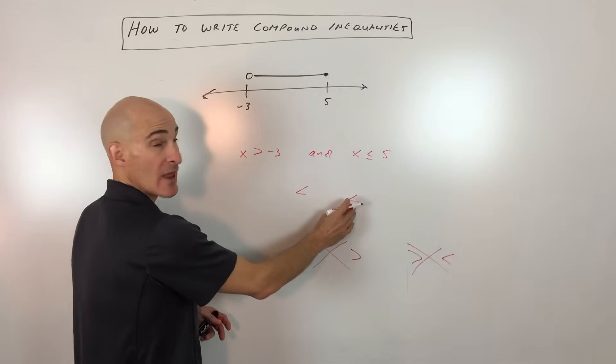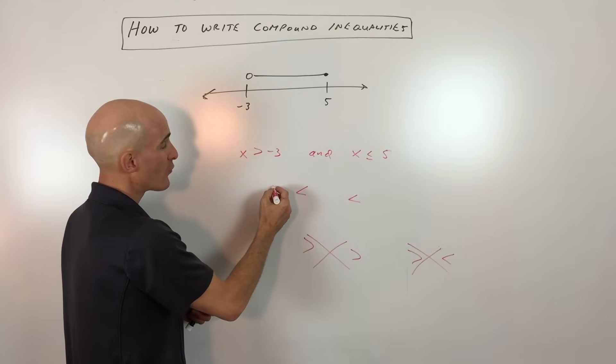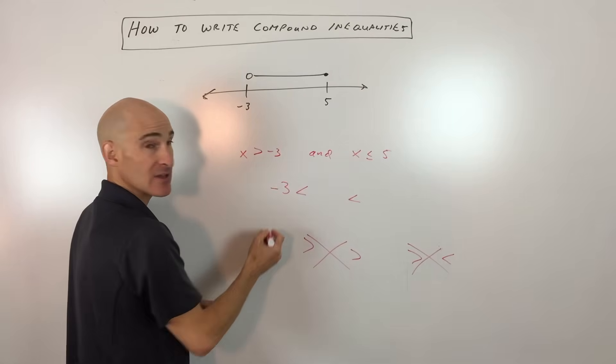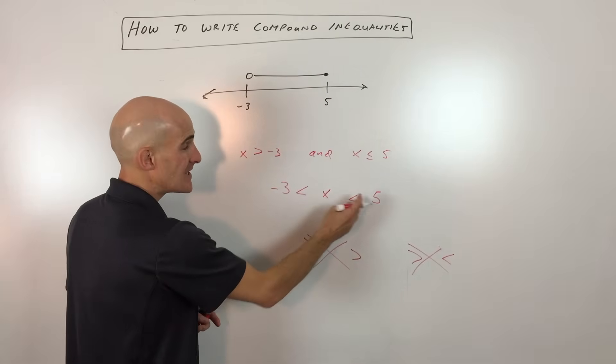What you want is them to be less than signs, pointing to the left, and you want the smallest number to be on the left, and you want the largest value to be on the right, and your variable is in between.